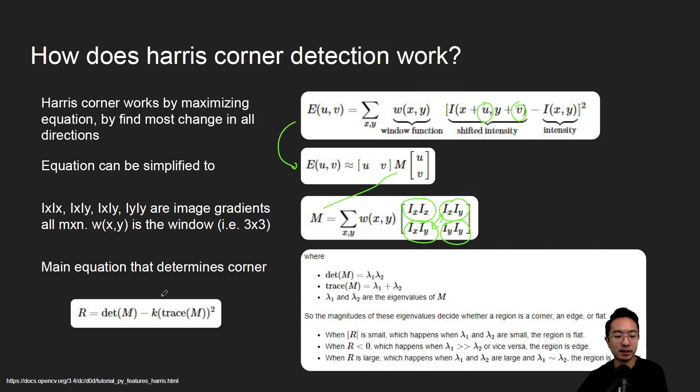And based on the M matrix, we have a response equation, and that is calculated using the determinant of M minus k times the trace squared. This is empirically determined, and it's typically between 0.04 to 0.06. So the determinant is calculated using the product of the eigenvalues, and the trace is the sum of the eigenvalues. So the idea is when R is small, when the two eigenvalues are small, then the region is flat. When one is bigger than the other, then it's edge. And then when both are large, then it's a corner.